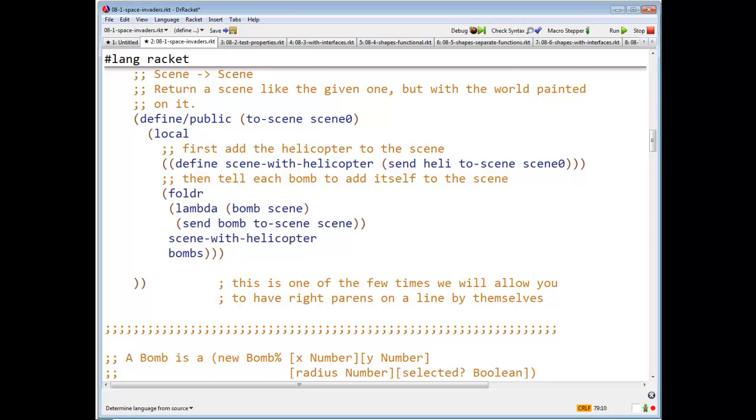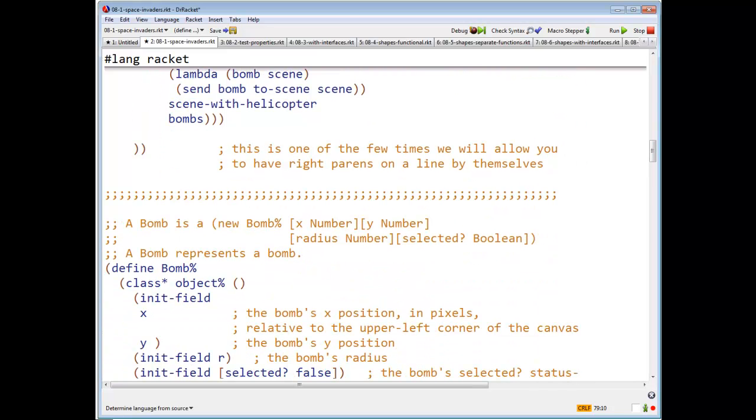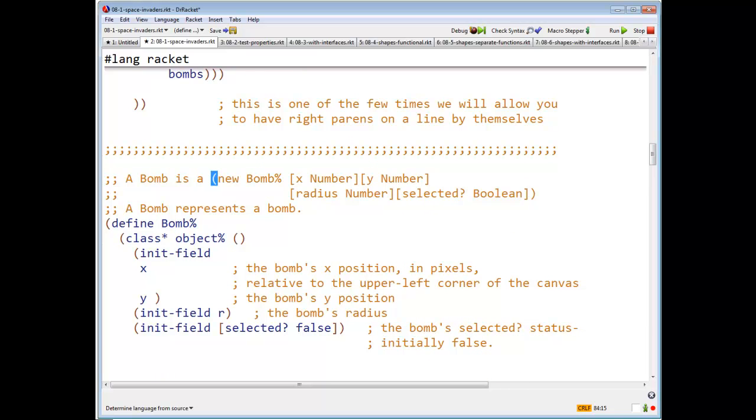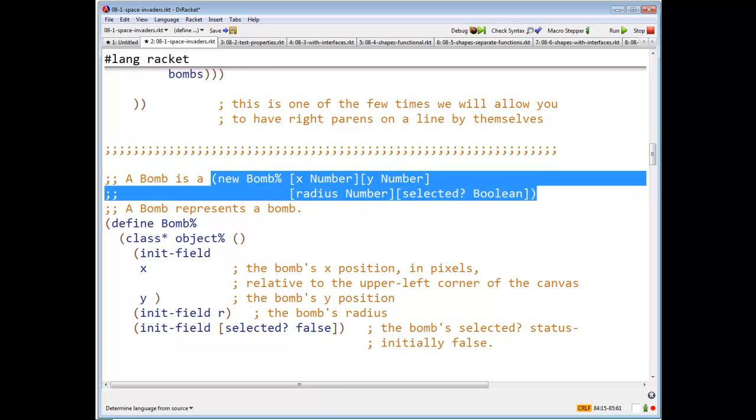Okay, so there's the world. Let's take a look at BOM. A BOM is a new BOM containing an X and a Y, which are a number, a radius, which is a number, and a field selected, which is a Boolean.